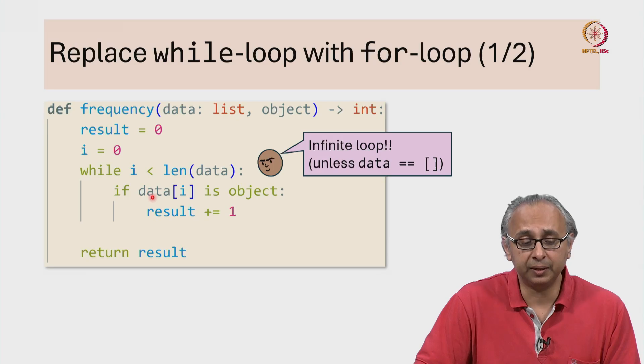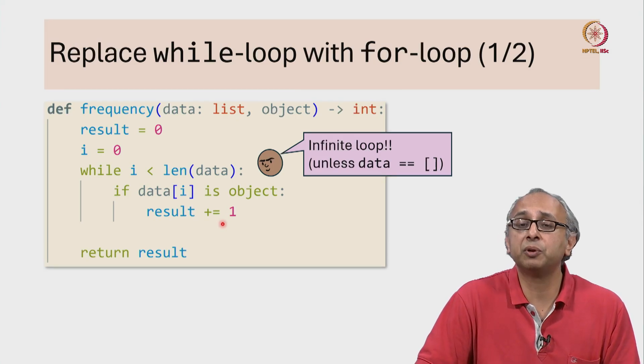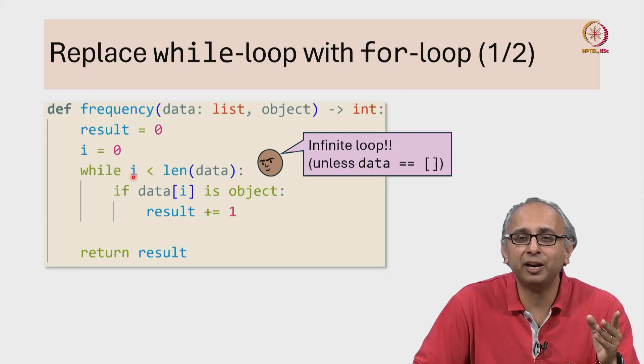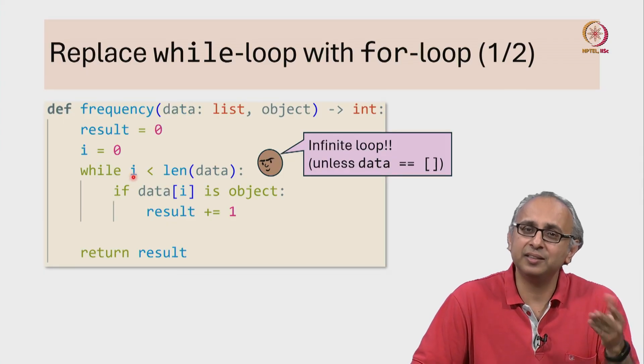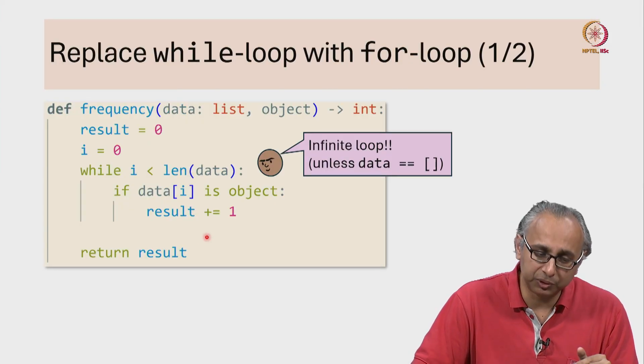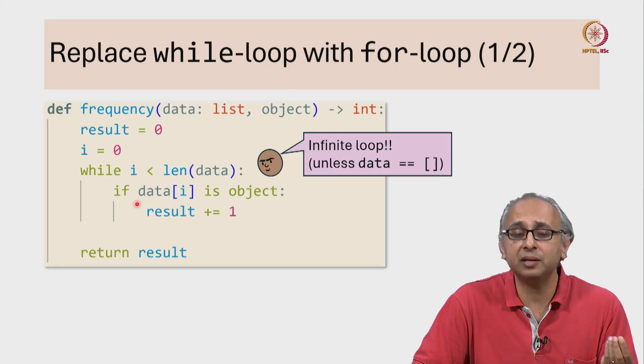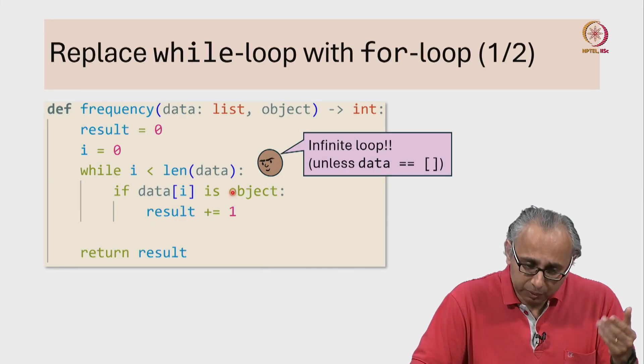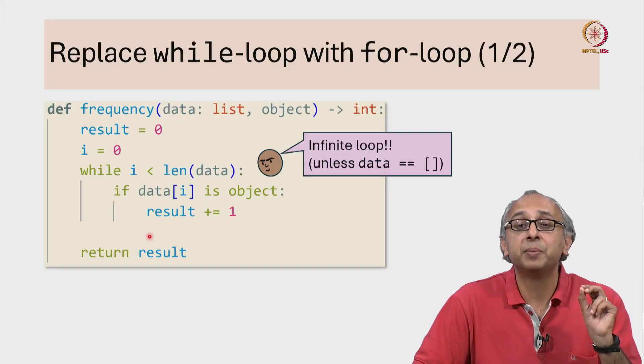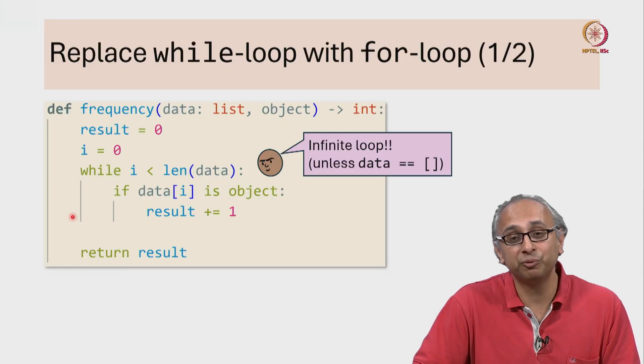But what would happen here? Well, we would check this condition. If it's true, we would increase result by 1, and then we would go back up. But we haven't modified i. i is still 0 and that is still less than the length, so we will do this again and again, regardless of whether this if condition is true or not. We will always either come into this if condition or skip past it, but since we are not modifying i, this is an infinite loop.